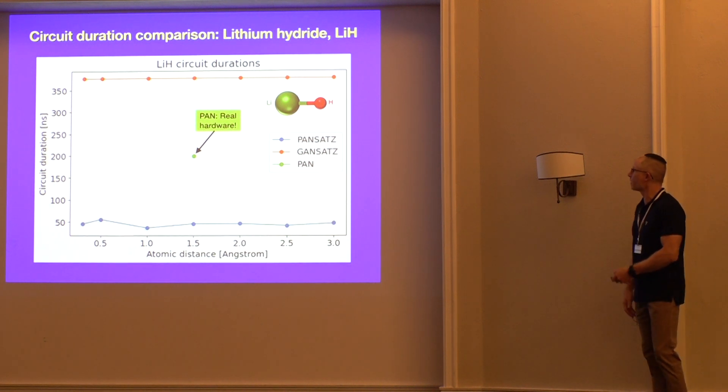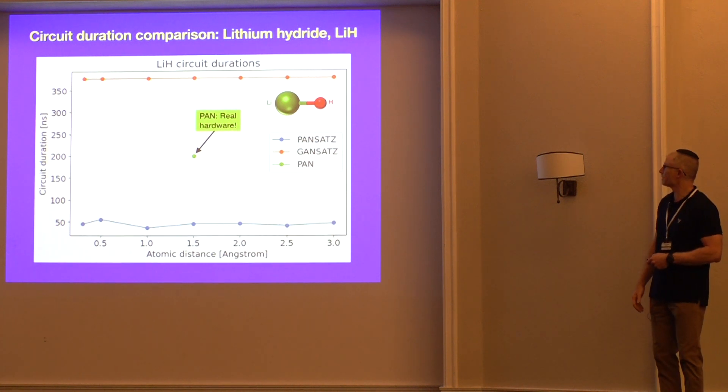And then in terms of, again, duration, the same plot for the gansatz. The PAN result on real hardware is, again, around 200 nanoseconds. And we're down by 50 for all interatomic distances.